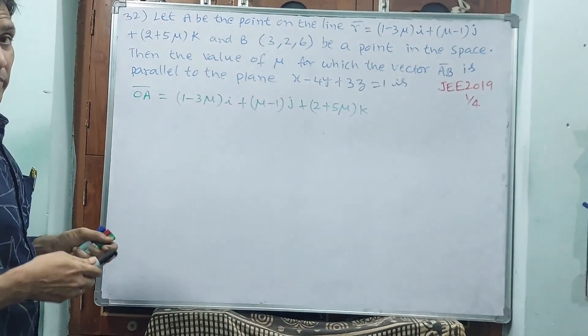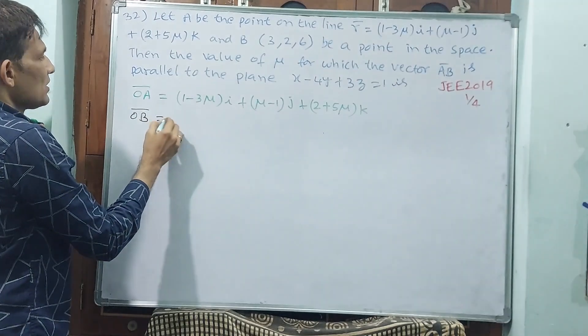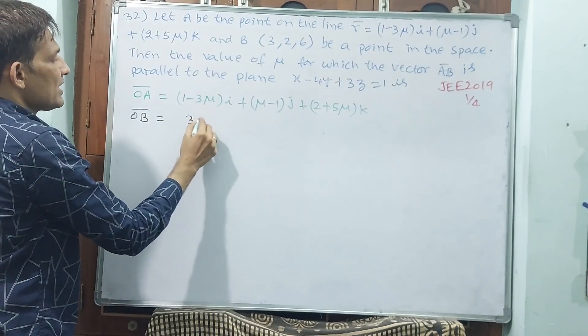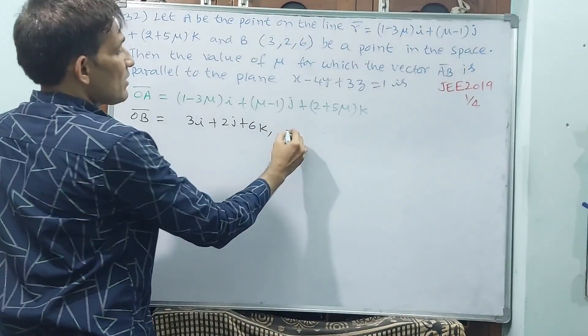Now I am going to write position vector OB also. B is there, okay. Position vector OB is 3i plus 2j plus 6k.